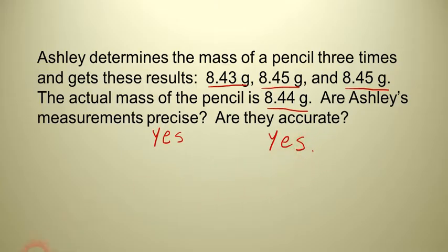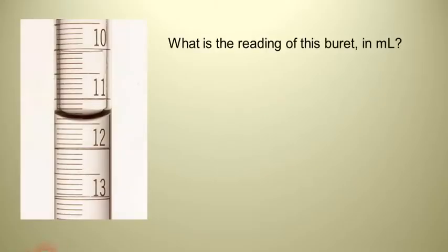So, accurate and precise. That's what we're trying to do in the laboratory. Let's try one more example before we stop. And this time, we're asked to take a reading of that burette in milliliters. Now, a burette is a device used to measure out a very specific, very precise amount of liquid or solution. And so, burettes are kind of unusual in that zero is at the top and not at the bottom. So we have to read this very carefully.